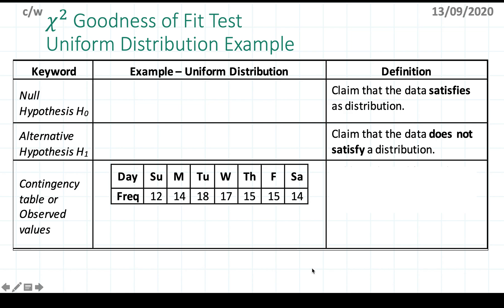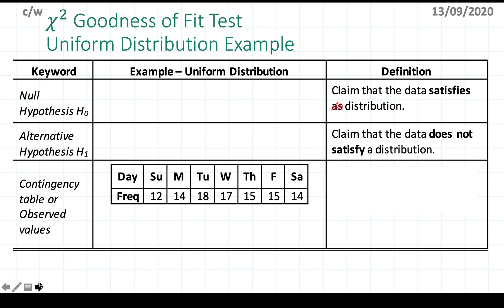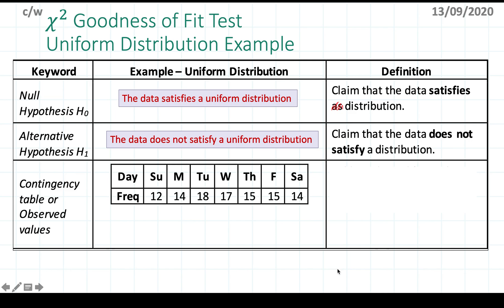The process and definitions will be similar with other distributions like normal distribution, binomial, and so on, but there are slight differences with how you calculate the expected values — that will be the major difference. If you understand the basics, the rest will follow. The null hypothesis is that the data satisfies a uniform distribution, and the alternative is that it does not satisfy a uniform distribution.